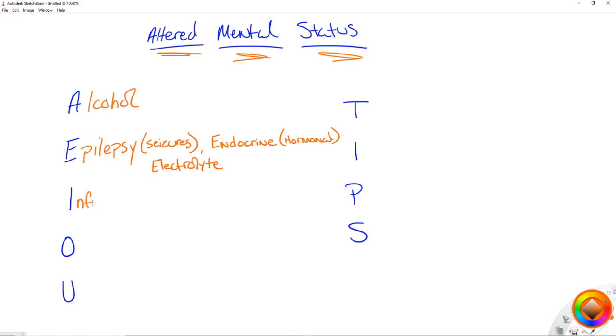Now I is for infection. And typically we think sepsis when we're thinking infection, but we should also be thinking like UTIs. We should think like central nervous type infections like meningitis or encephalitis or something like that, that goes right and attacks the brain itself.